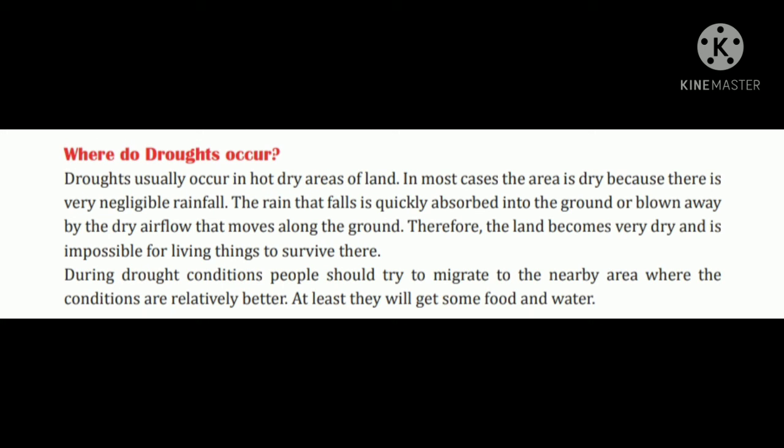Where do droughts occur? Droughts usually occur in hot, dry areas of land. In most cases, the area is dry because there is very negligible rainfall. The rain that falls is quickly absorbed into the ground or blown away by the dry air flow that moves along the ground. Therefore, the land becomes very dry and it is impossible for living things to survive there.